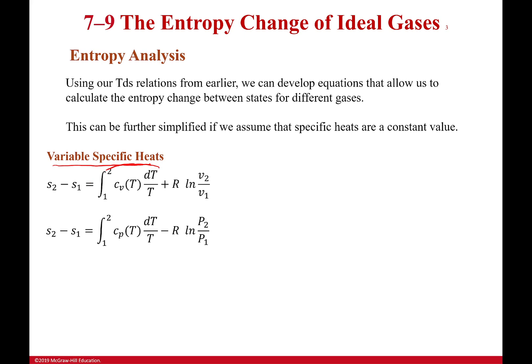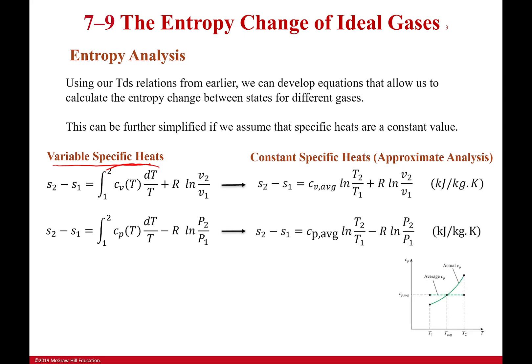One way we can deal with it is we can say, okay, well, rather than having variable specific heats, which is accurate, they do change over a range of temperatures, I can say they're constant specific heats. This is approximate, but it can actually be fairly close to the right number.